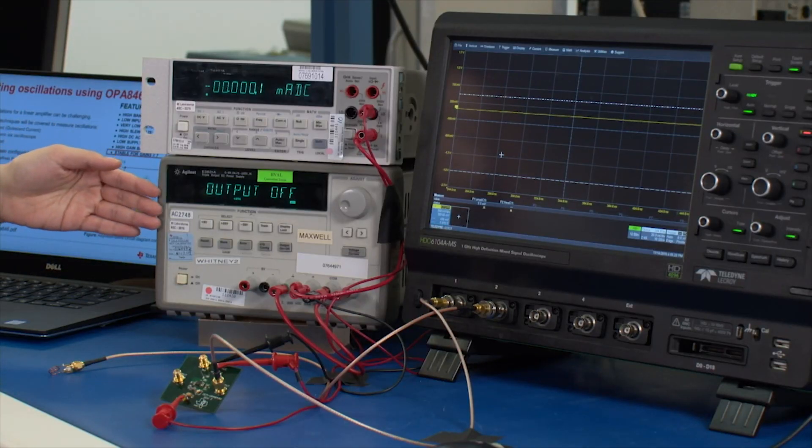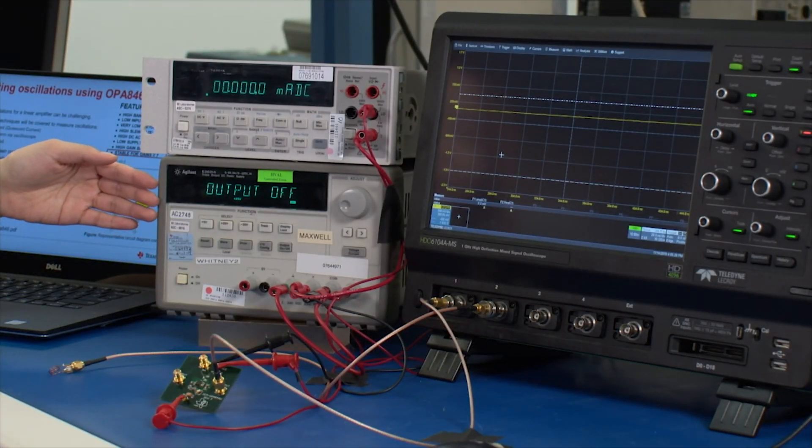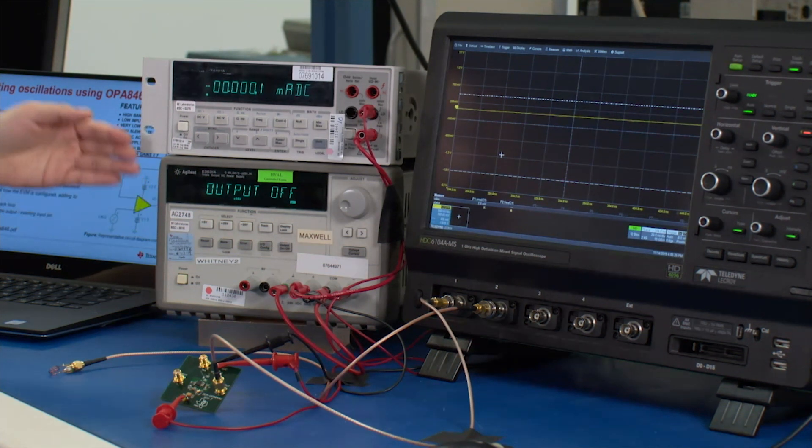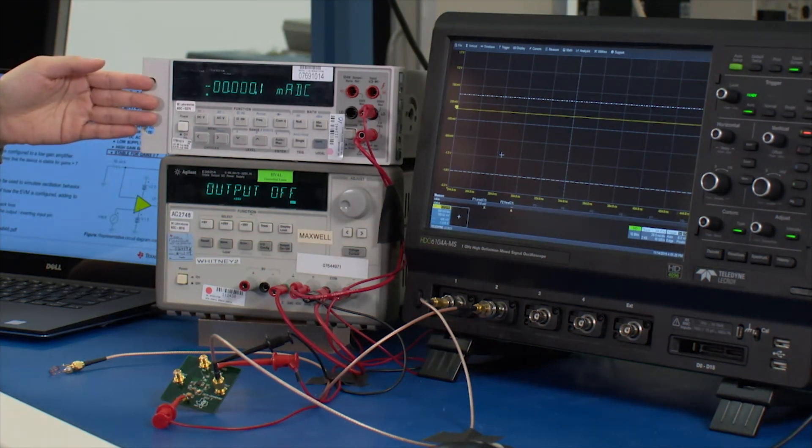We will be using the power supply set to plus and minus five volts to power the board, and connected is the multimeter which will monitor the supply current.